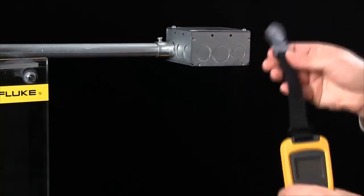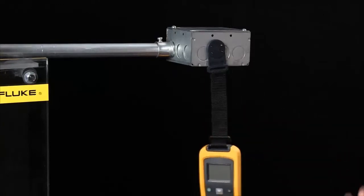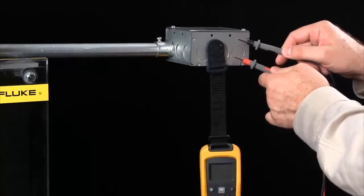Simply place the strap through the top of the meter and you can hang it on any enclosure, electrical box, wherever your application may be. And this allows you to keep your hands free to take safe electrical measurements.